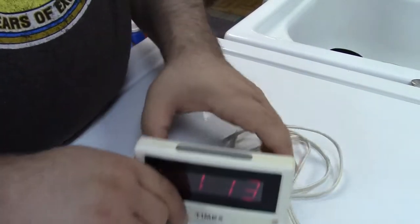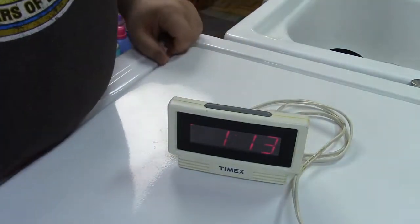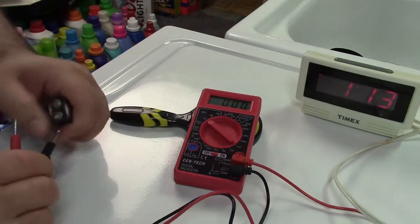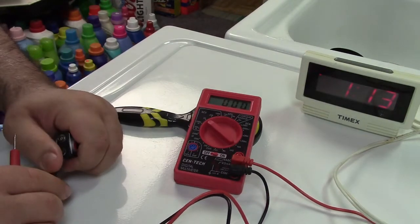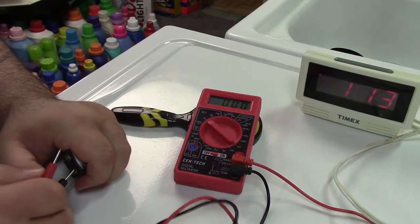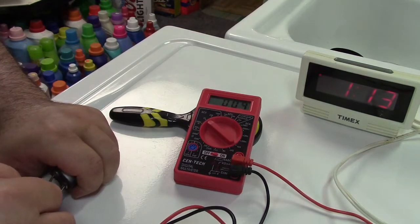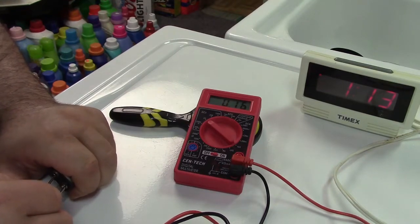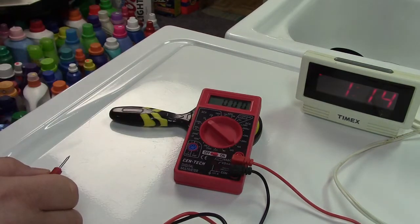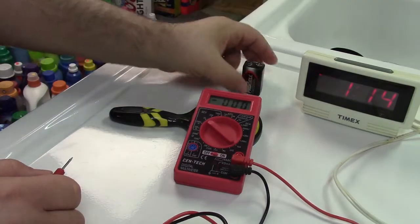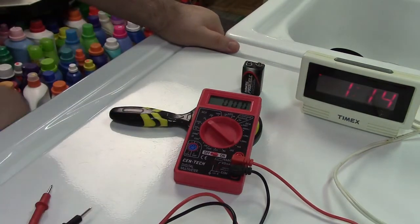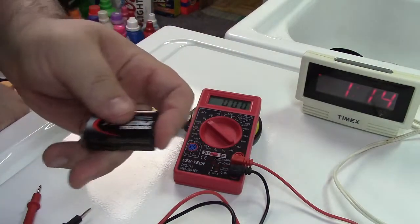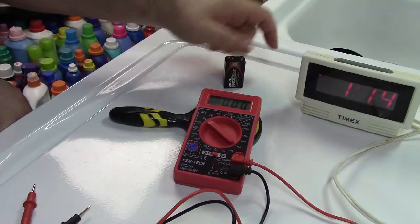Just for fun, let me get the meter out and see what the battery still reads, if anything. Okay, stick the probes in the battery. 0.16, yeah, totally dead. So good thing I removed that. I don't know if they actually still leak when they're completely dead like that, but anyway it's a good thing that's out of there.